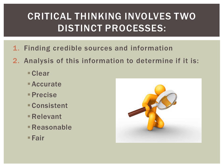Critical thinking involves two distinct processes. First, we need a credible source with credible information. This can oftentimes be the most challenging part, because the definition of credible is, in some ways, in the eye of the beholder. Someone who is very conservative will look at Fox News as being very credible, whereas somebody who is more progressive or liberal will see Fox News as a very unreliable source.